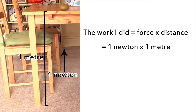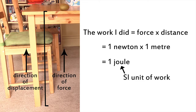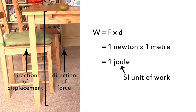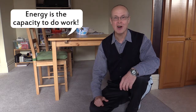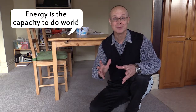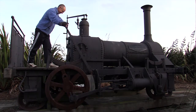That's one Newton multiplied by one metre, which equals one joule. The joule is the standard international unit of work. When the force is in the same direction as the displacement of the object, the work is simply the force applied to an object times the distance it moves. I had to expend energy to do that work — it takes energy to do work. So in a sense, energy can be thought of in terms of its capacity to do work. There's a historical reason why we think of energy in this way.